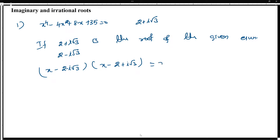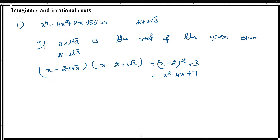If we multiply these two factors together, we get x minus 2, the whole squared, plus 3. Expanding: x minus 2 squared gives x² minus 4x plus 4, and adding 3 gives x² minus 4x plus 7. This is the factor we are going to divide with.